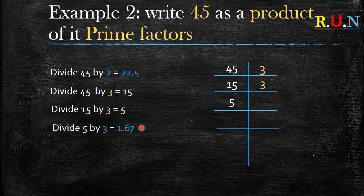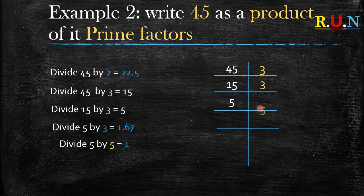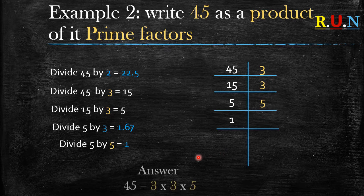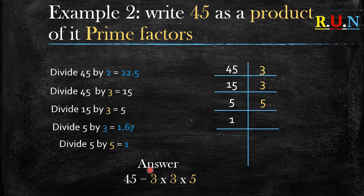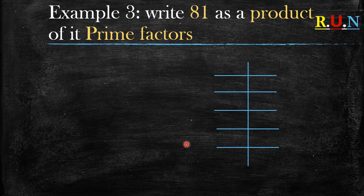15 divided by 3 equals 5. When we divide 5 by 3 we get a decimal, so we can't continue dividing by 3. We move to the next prime number, which is 5. 5 divided by 5 gives us 1, which means we have reached our answer. The numbers on the right hand side are always your answer, so: 45 = 3 × 3 × 5. That is 45 written as a product of its prime factors.